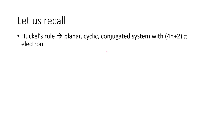Let us recall what Hückel's rule is, because most of the problems we are going to solve are based on the aromaticity principle. The Hückel rule says that a planar cyclic conjugated system with 4n+2 pi electrons is going to be aromatic in ground state.